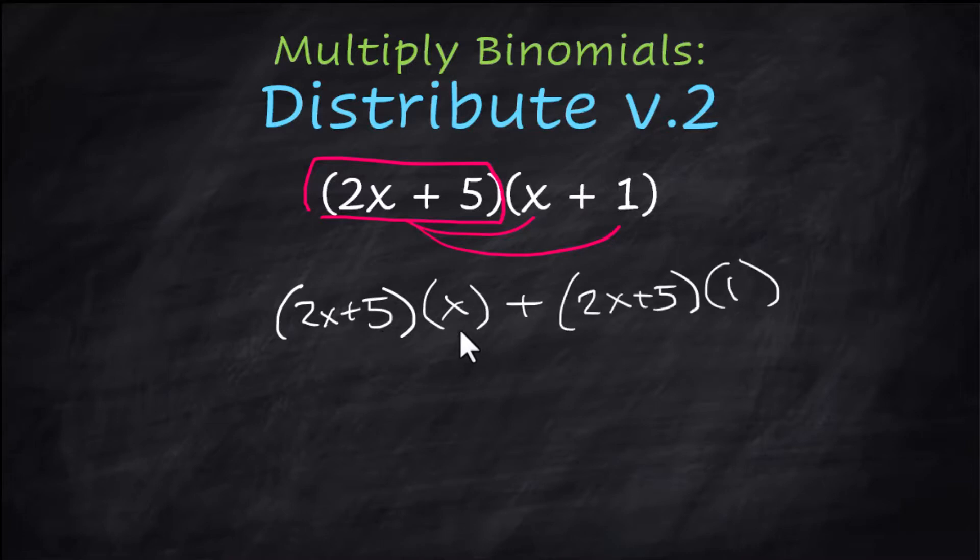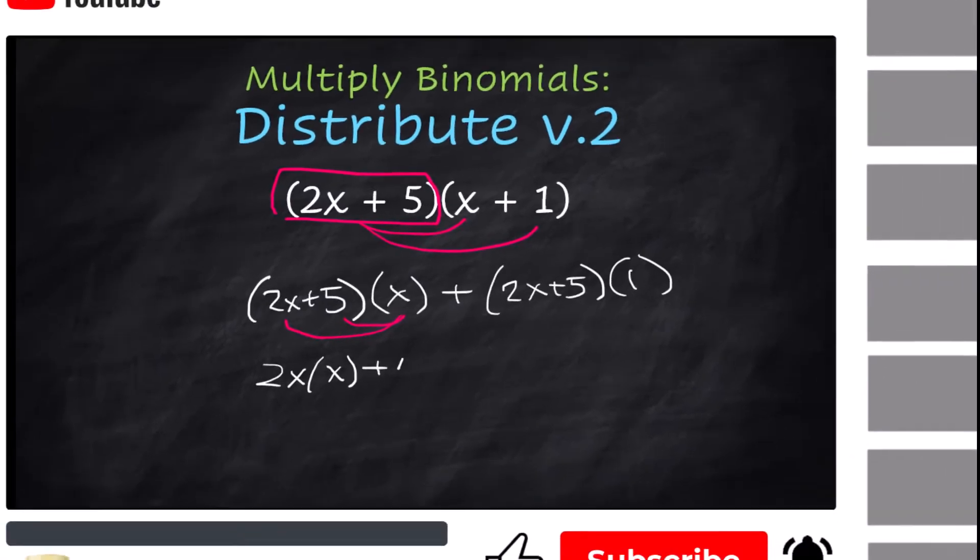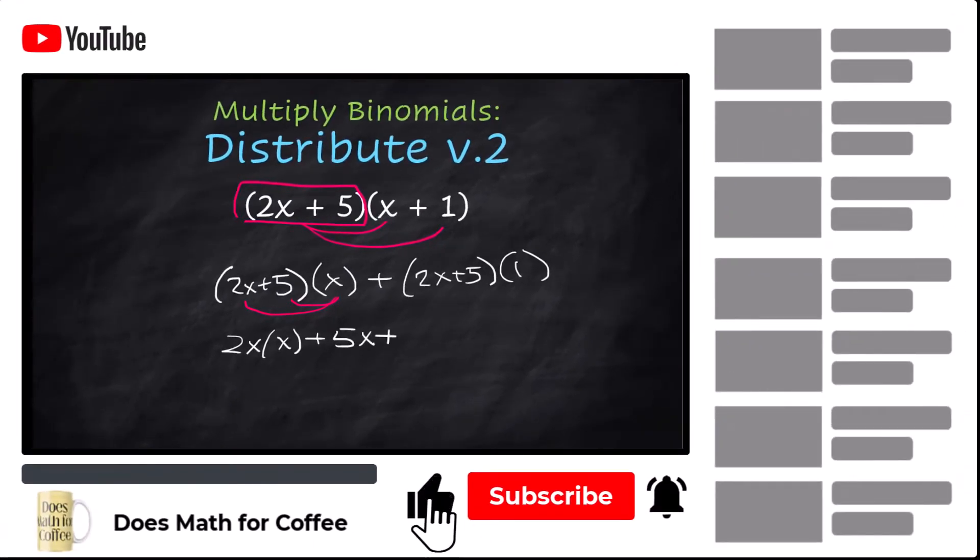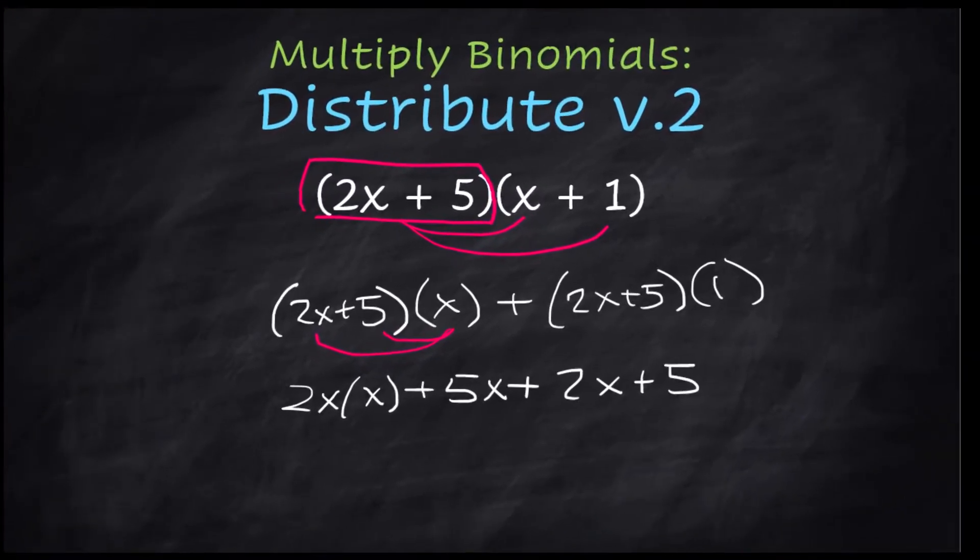Now you do distributive property again. We're going to bring the x in and multiply it times 2x and 5. And the 1 times this isn't really going to do anything, but we are going to distribute that x in this way. And that is 2x times x plus 5x plus, and then 2x plus 5 times 1 is just 2x plus 5. Here comes the answer.